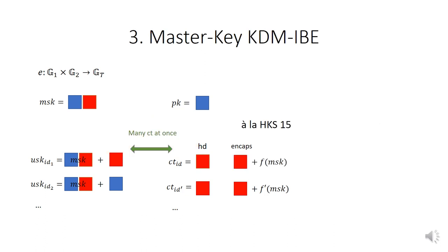Our scheme uses an argument that handles all challenge ciphertexts at once. This borrows techniques from Hofheinz, Jager, and Striecks, who achieved this in a different setting — namely, tightly secure identity-based encryption where the security loss does not grow with the number of challenge ciphertexts. We adapt these techniques, and it is remarkable that they are useful for achieving a different goal: KDM security for identity-based encryption. This is the last technical ingredient we use to obtain master key KDM identity-based encryption.